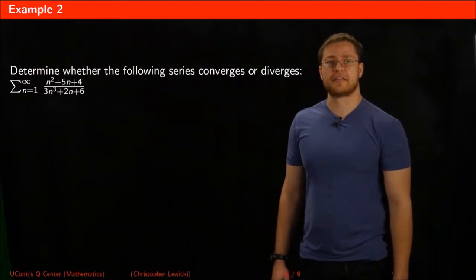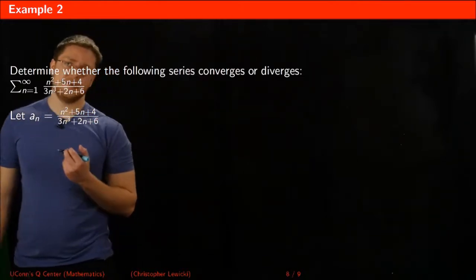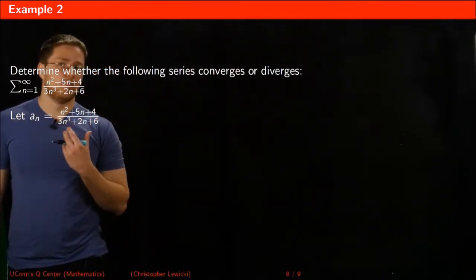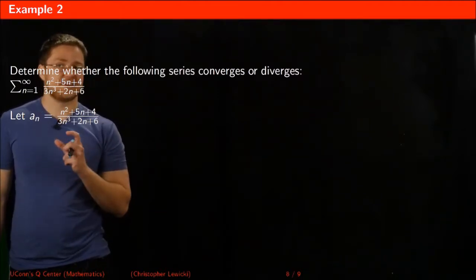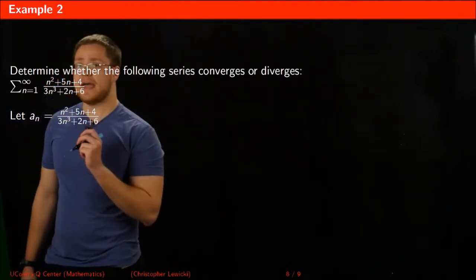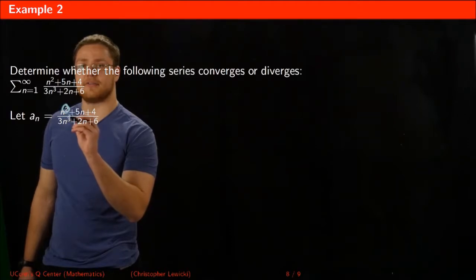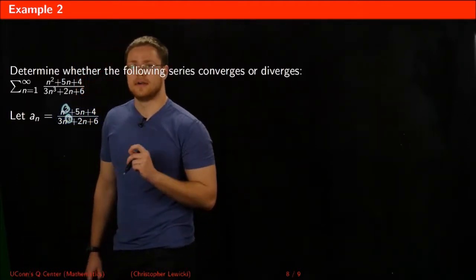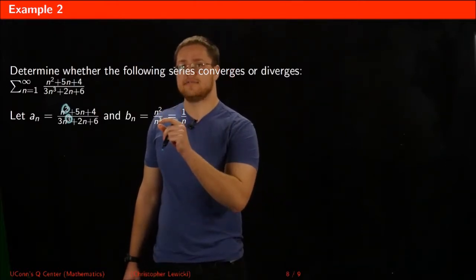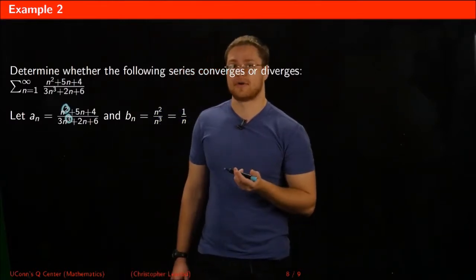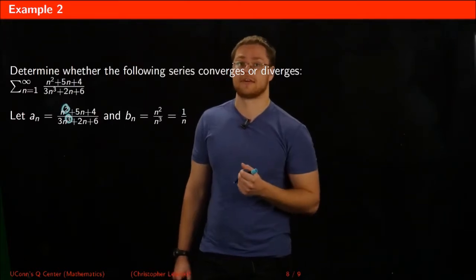Let's look at a more difficult example. I set my given sequence equal to aₙ. When constructing bₙ, I ask which part of my given sequence has the biggest impact on its n behavior — just like with any rational function, I compare the degree in the numerator to the degree in the denominator. Using this, I choose bₙ to be n squared divided by n cubed, which simplifies to 1 over n — and I know the series 1 divided by n diverges by the p-series test.